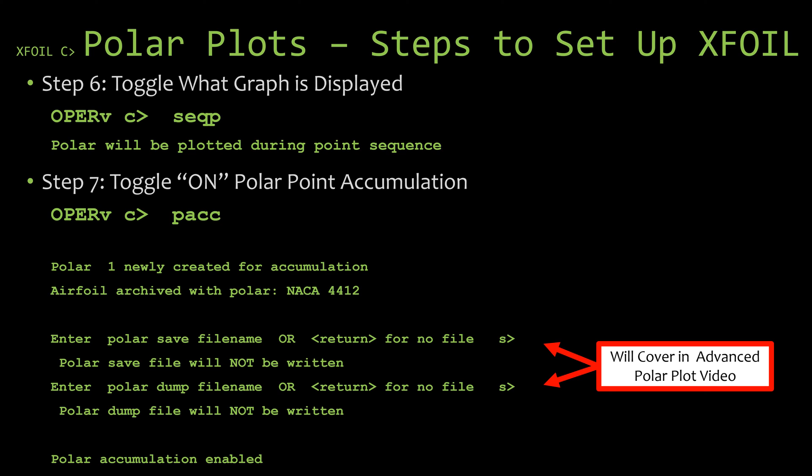So for different angle of attacks or different coefficient of lifts, and when we do that it's going to then be able to display on our polar plots all of the different values. Now it's going to ask you for a couple of file names. At this point don't worry about it, we're not going to be getting into the files in this video. We're going to save what those files are for the polar plots advanced video that's coming out shortly. So when it asks you for the polar save file name or the polar dump file name, just hit enter without entering a file name.